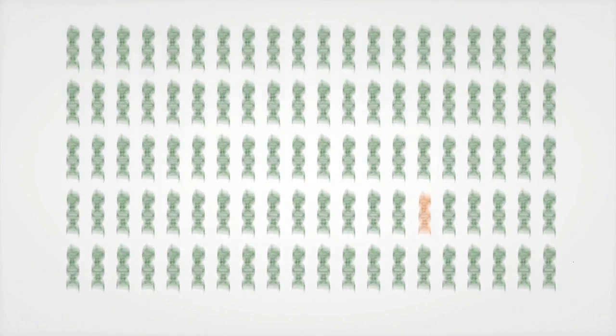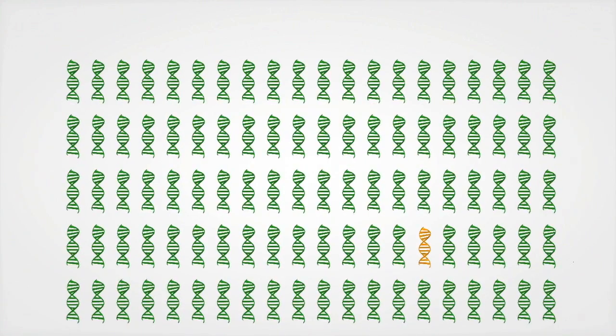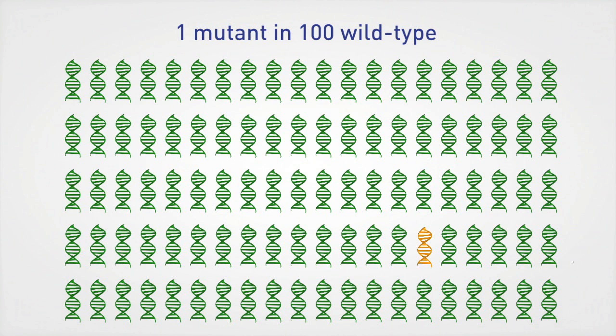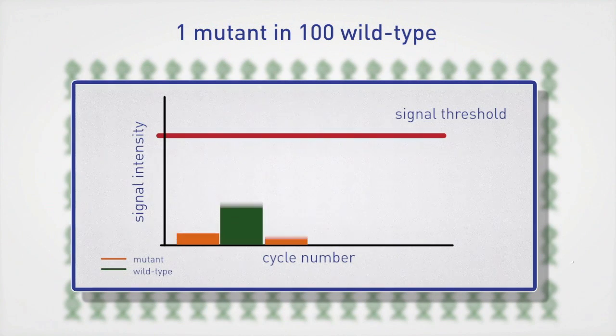For example, if a sample containing 99 wild-type molecules and one mutant equates to the mutation being present at 1 in 100, or 1%, using TaqMan SNP genotyping assays in standard real-time PCR mode,